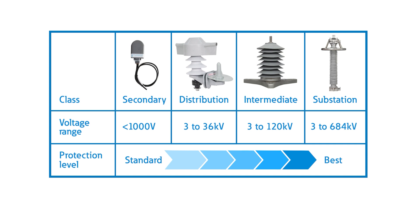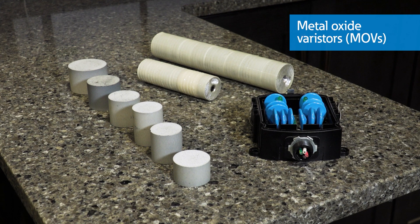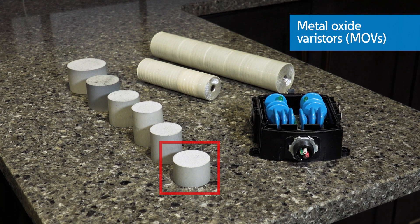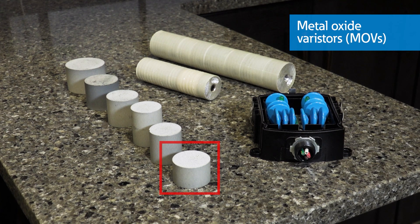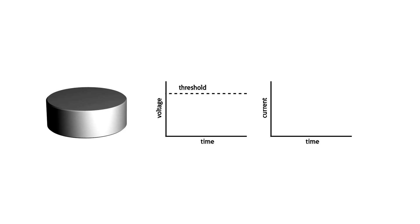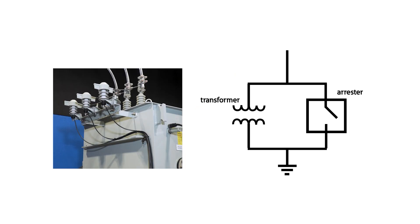All arrestors are mainly comprised of cylindrical blocks called MOVs, or metal oxide varistors. MOVs are materials with non-linear conductive properties. Normally they're insulators, but if the voltage across the block terminals reaches a designated threshold, then the MOVs will suddenly begin to conduct. Utilities will install arrestors as close as possible and in parallel to the piece of equipment that they're trying to protect.